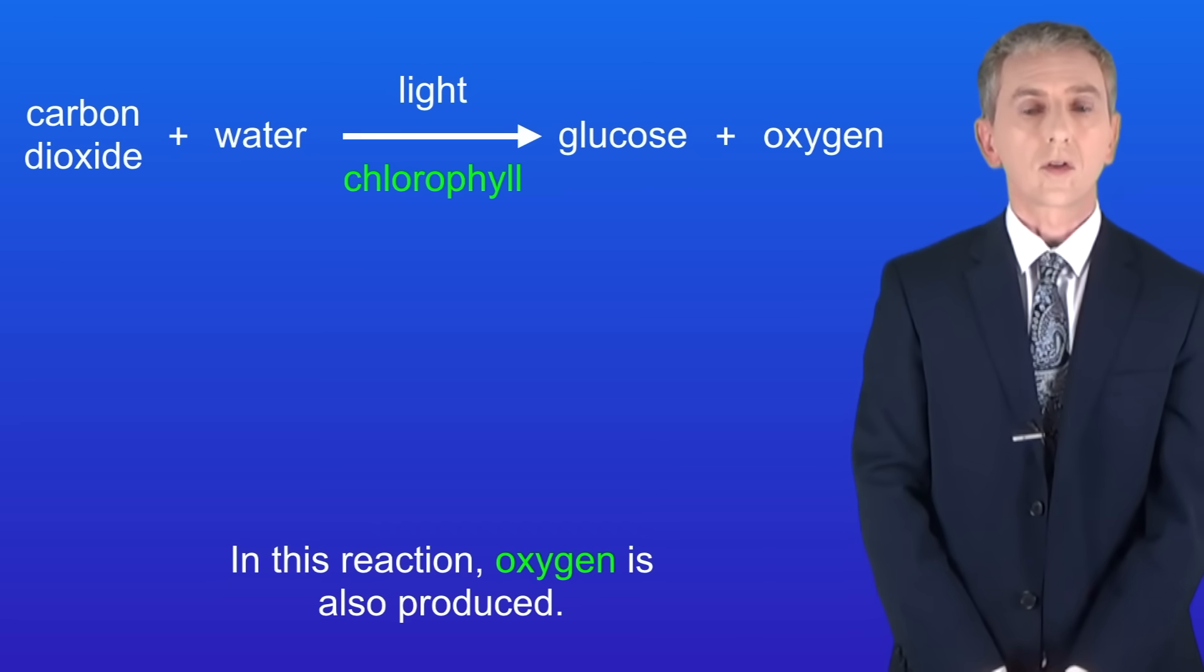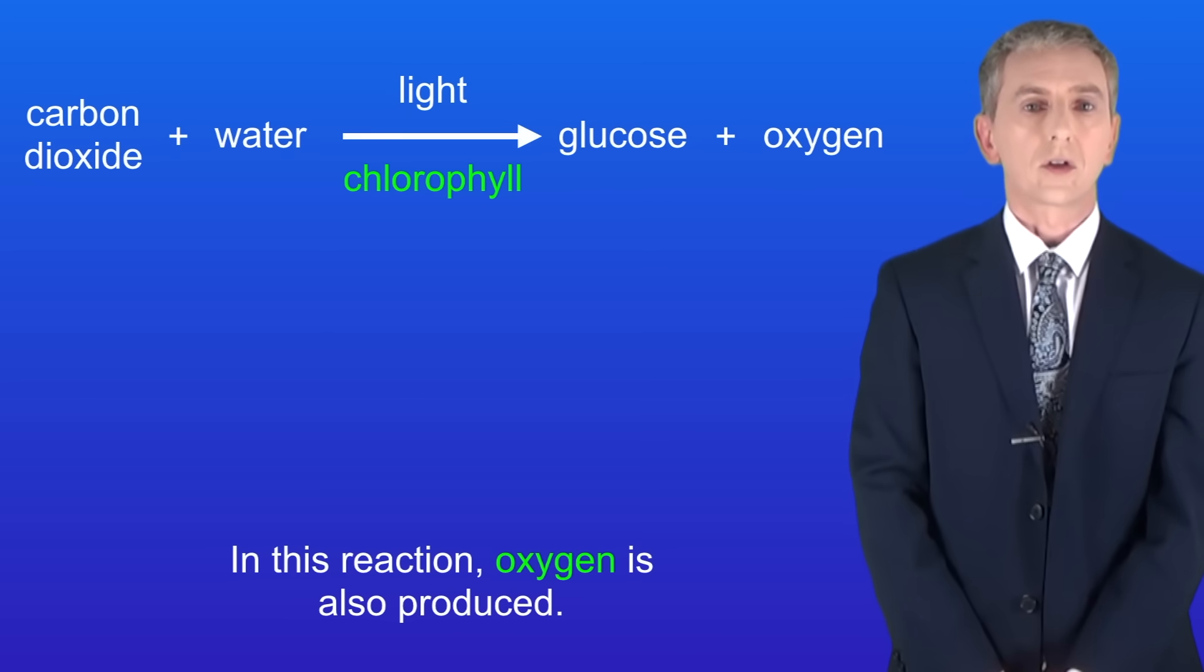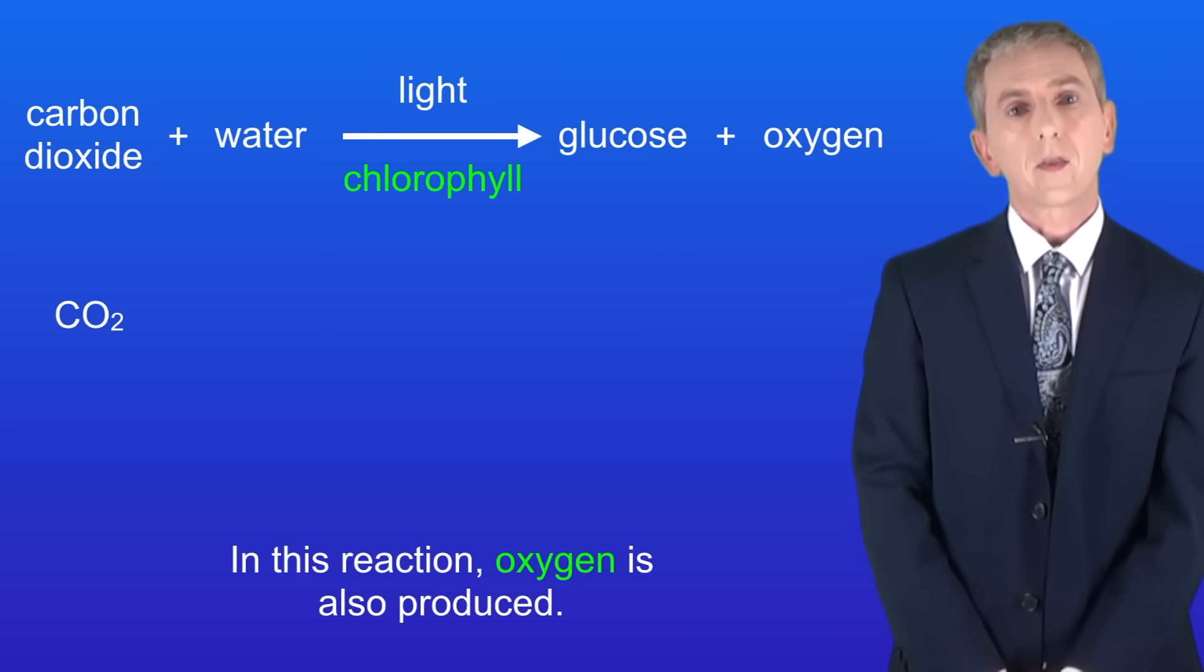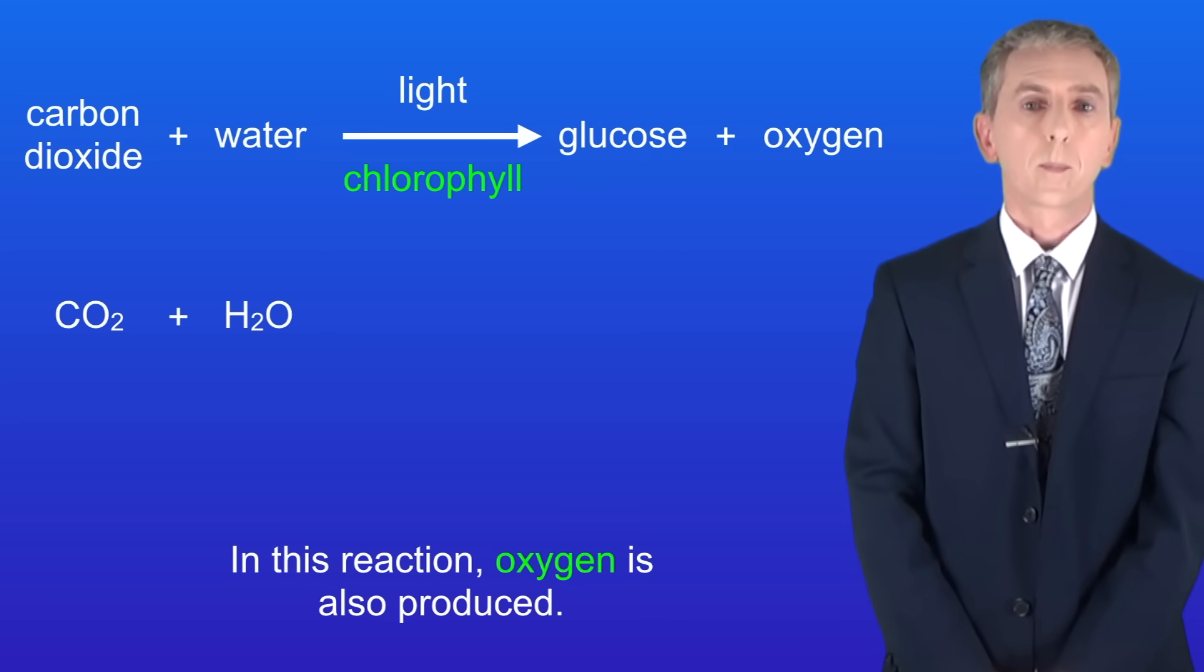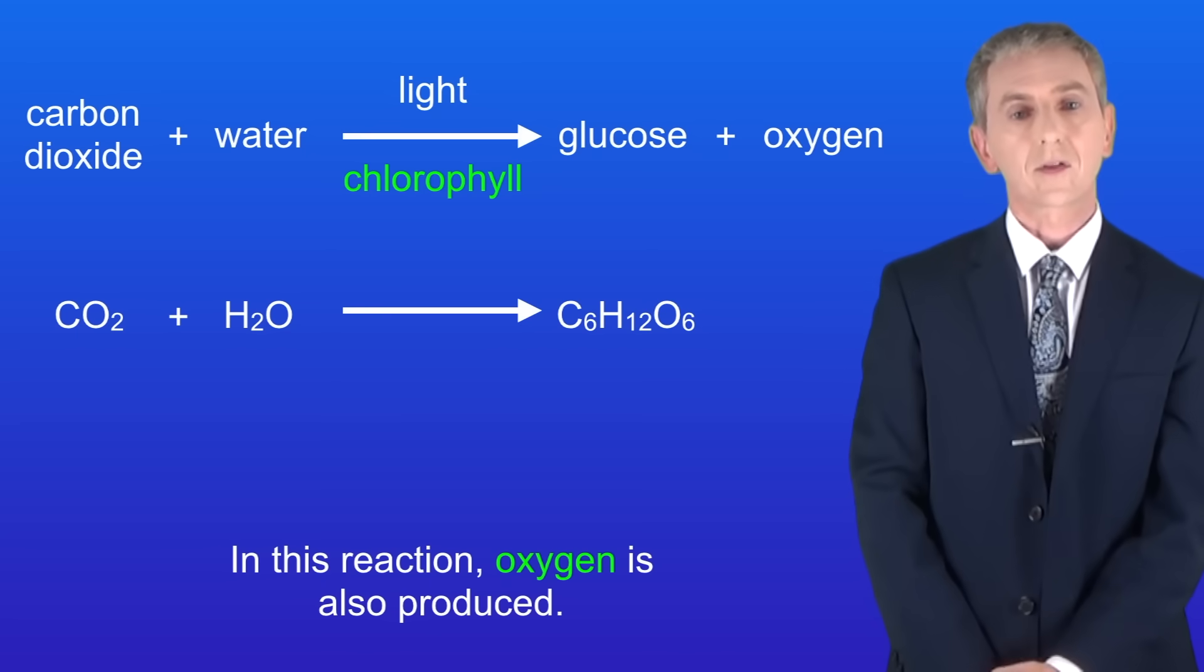In this reaction, oxygen is also produced. This is called the word equation for photosynthesis and you're expected to know this. You're also expected to recognize the chemical formulas for the molecules in this reaction. The formula for carbon dioxide is CO2 and the formula for water is H2O. The formula for glucose is C6H12O6 and the formula for oxygen is O2.